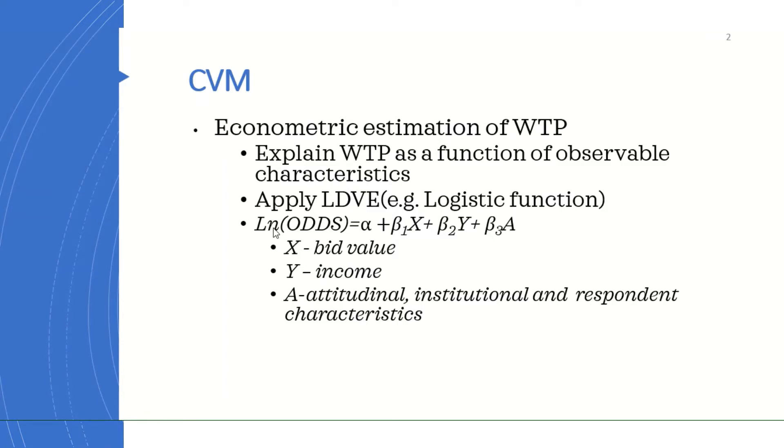Apply this kind of model: the log of odds is equal to alpha plus beta 1 X plus beta 2 Y plus beta 3 A, where X represents bid values, Y income, and A attitudinal and institutional and respondent characteristics. The parameters are estimated using this formula or model specification.